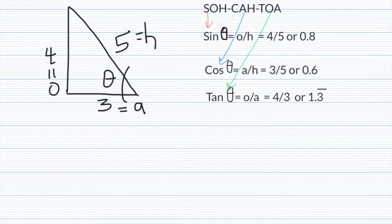The cosine of θ is adjacent divided by hypotenuse, or 3 divided by 5. And finally, the tangent of θ is the opposite divided by the adjacent, or 4 divided by 3. In this case, we can write that as 1.3 repeating.